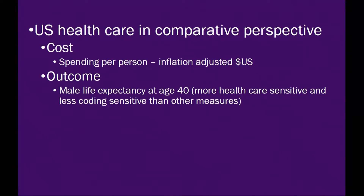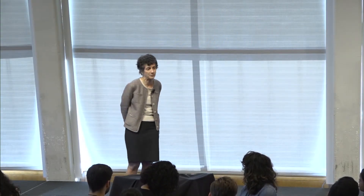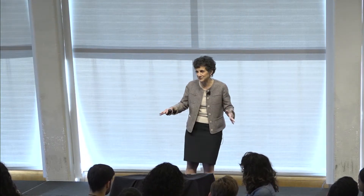Now, why life expectancy at age 40 and not at birth or younger? Well, life expectancy at birth is actually very sensitive to methodological decisions about how you address premature births and stillbirths and other things like that. So some people are concerned about that. But the other reason I like to look at males at age 40 — now that I can look across the room, I'm sort of safe saying this.